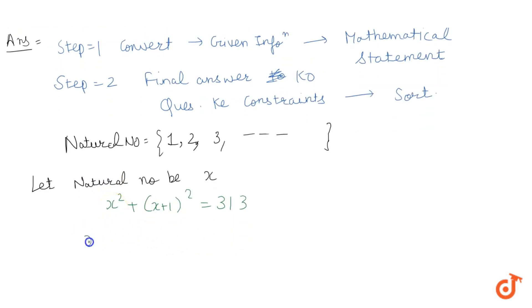So let's open it. We have x² + x² + 1 + 2x = 313.